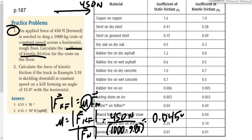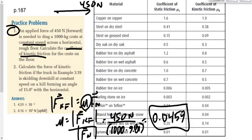That gives 0.0459. Why three digits? 450 has three significant figures, 1,000 has three, so the final answer should have three — the least precise piece of data. Significant figures count now. If it's a quiz or test, you can ask me about significant figures; I'll help. But if you do them wrong, you'll get marked wrong. So if you're unsure, make sure you ask.